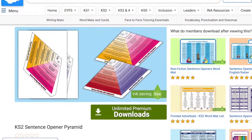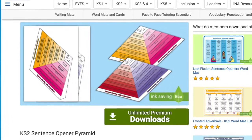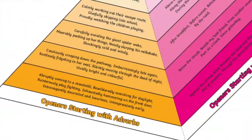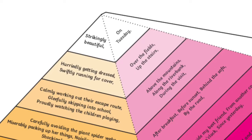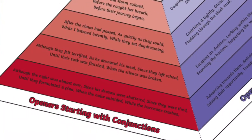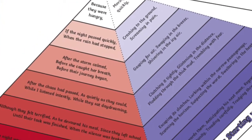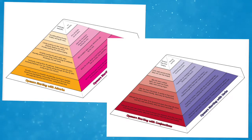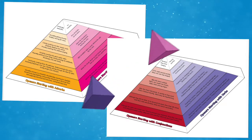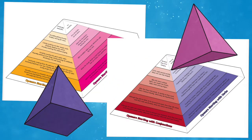You can also check out the Key Stage 2 Sentence Opener Pyramid. With the help of this sentence opener pyramid, you can teach your learners how to start engaging sentences. This resource provides a simple but effective way to boost sentence writing in your class. Once you've printed the two sheets off, cut out the two halves of the pyramid and glue them together. You now have a sentence opener pyramid that your pupils can have on their desks to refer to.